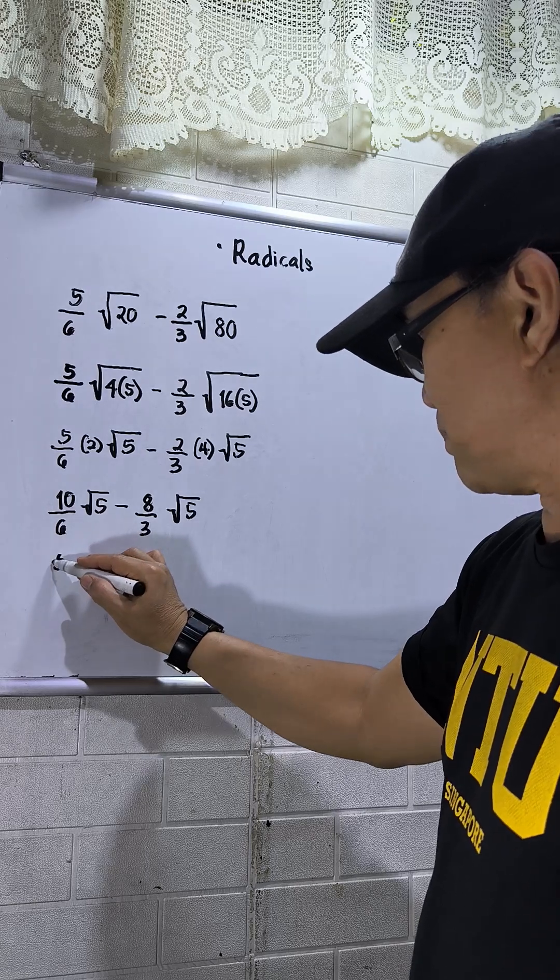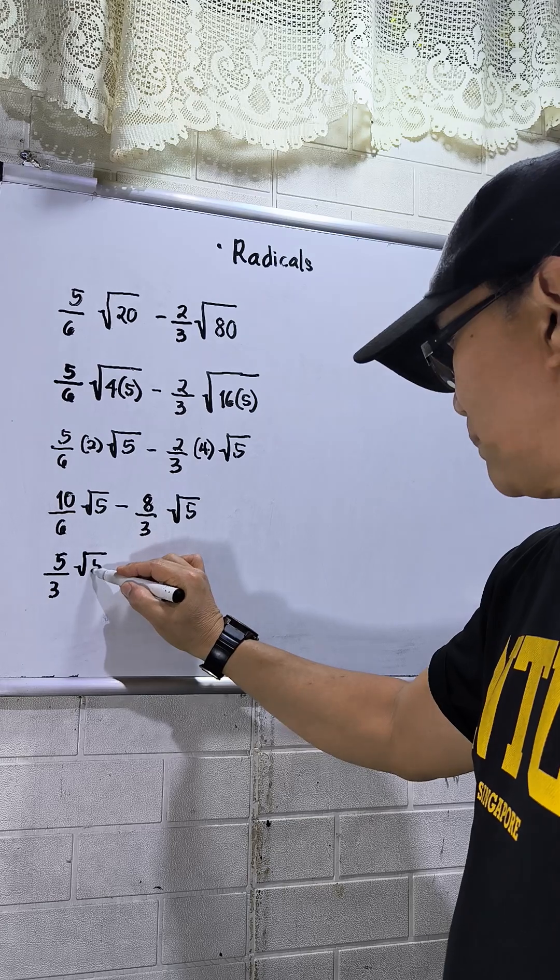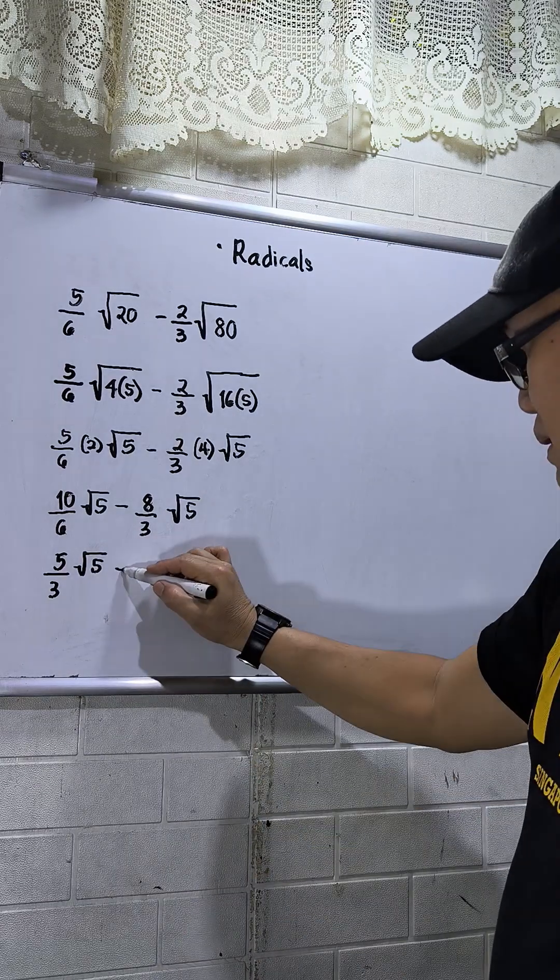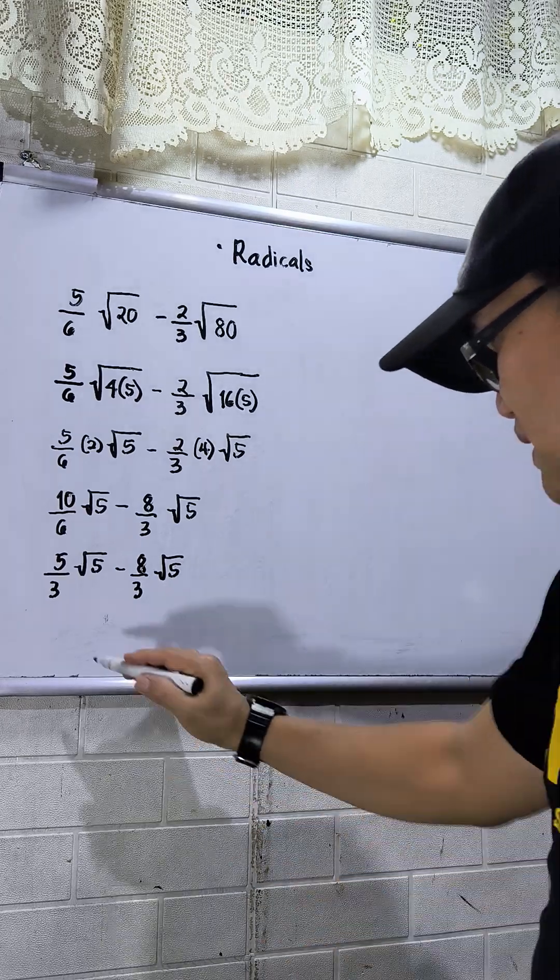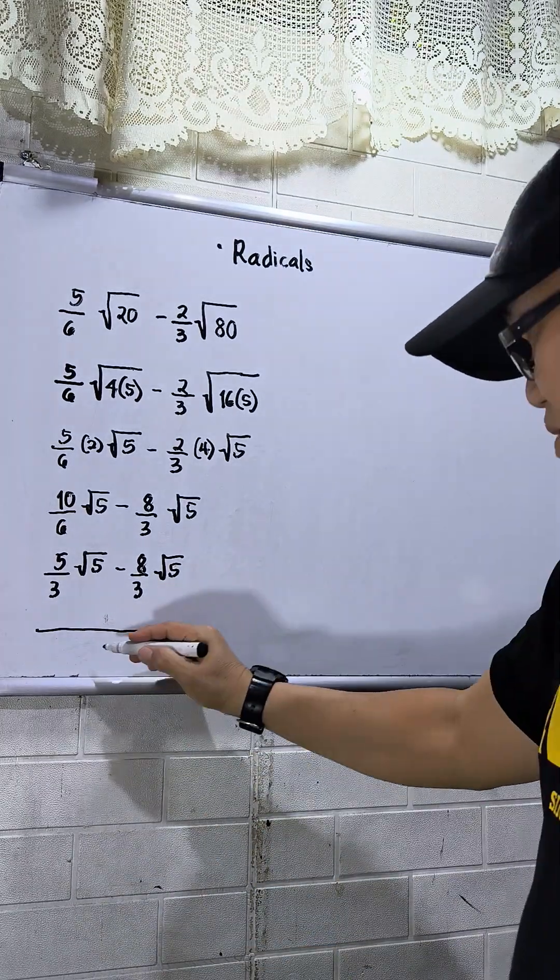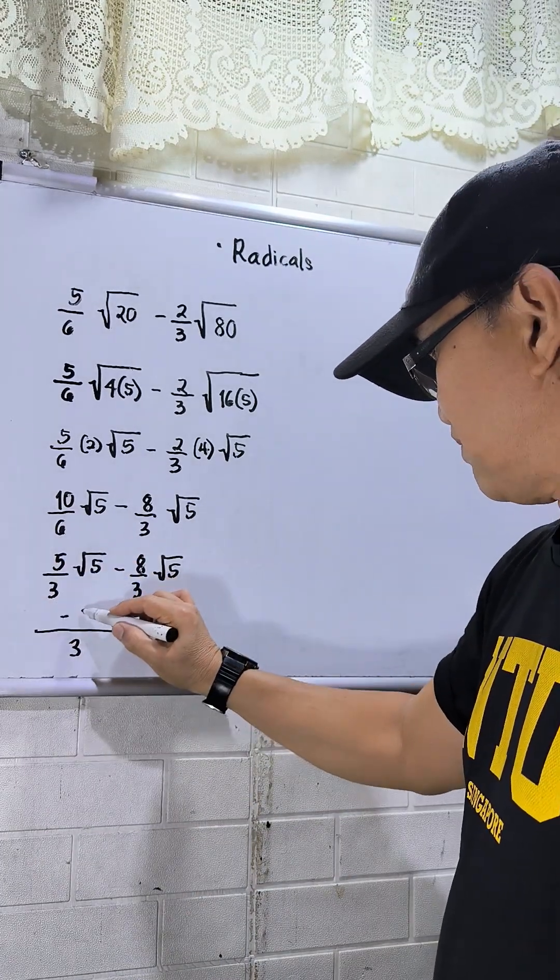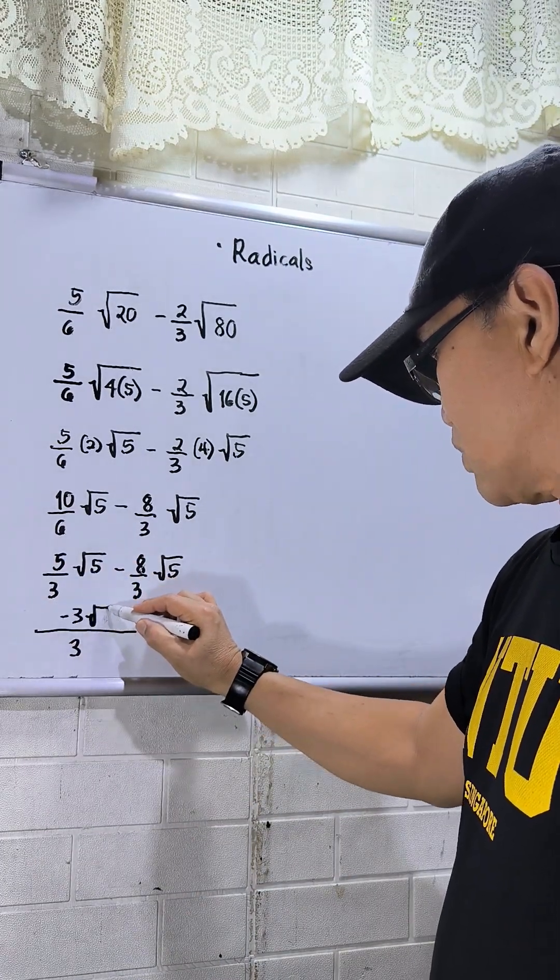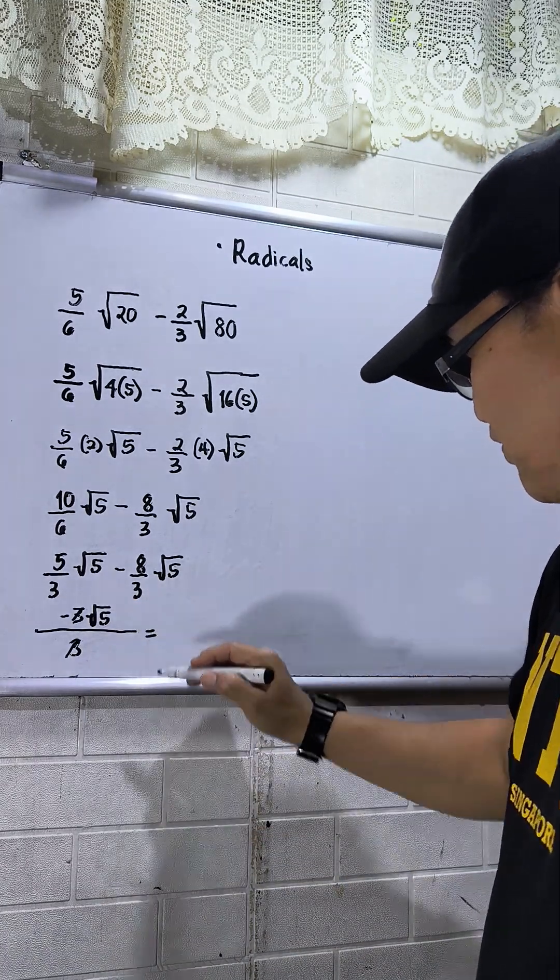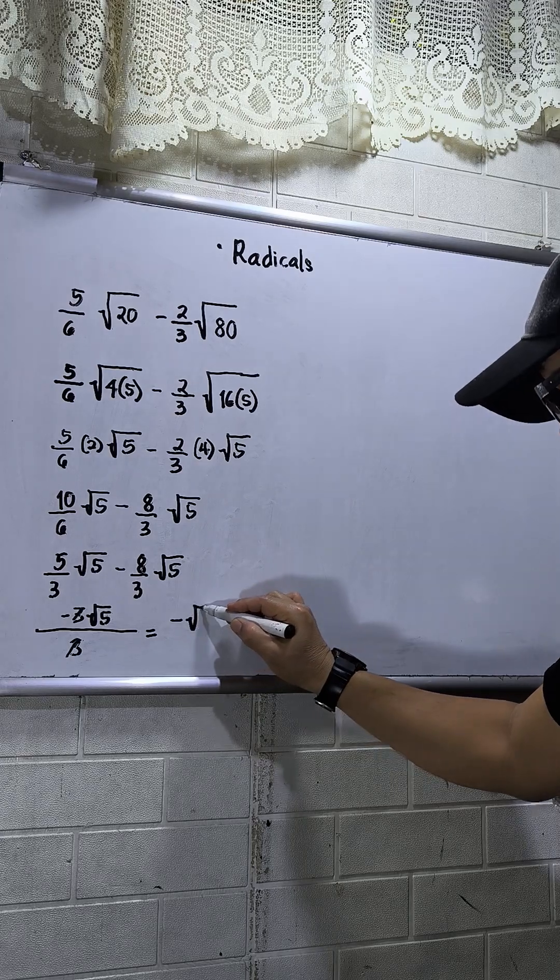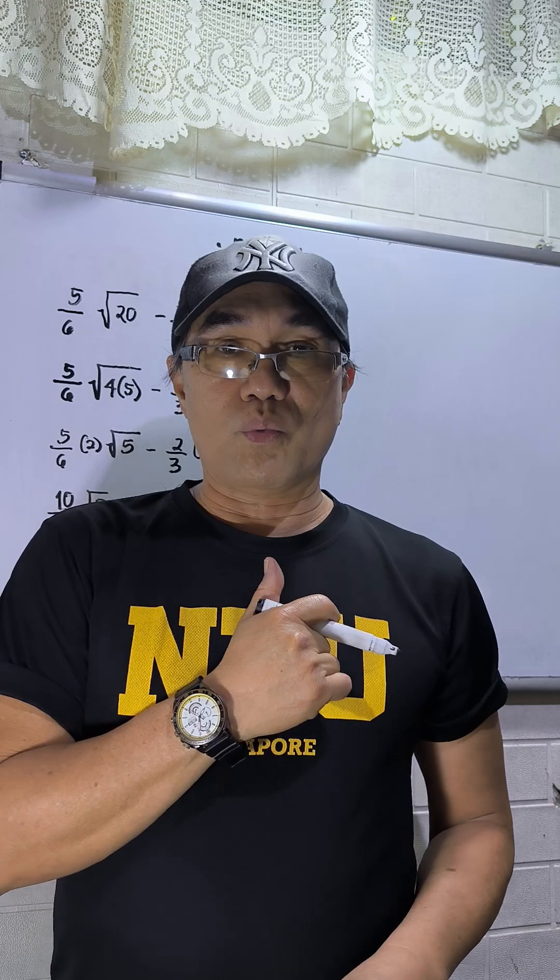LCD, take note this is a similar fraction, so this will be 3. Then 5 minus 8, that is negative 3, square root of 5. So 3 will be crossed out, so I have now my final answer. My final answer is negative square root of 5. That's all, thanks for watching.